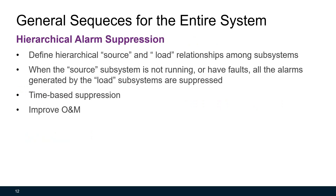The goal of the hierarchical alarm suppression algorithm is to minimize the number of alarms generated. In a forced-air system, the AHU provides conditioned air to the zones, and the VAV terminal units control airflow and temperature to the zones. The AHU is the source and the VAV terminal unit is the load. If anything goes wrong with the AHU, such as fan failures or cooling coil faults, all VAV terminal units may generate many unnecessary alarms. The alarm suppression algorithm will suppress these alarms, improving HVAC system operation and maintenance.